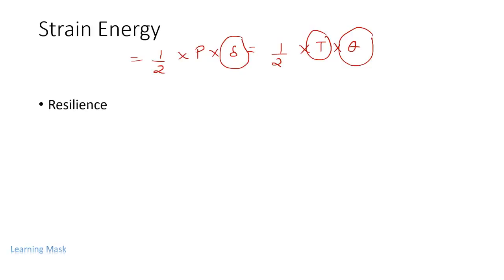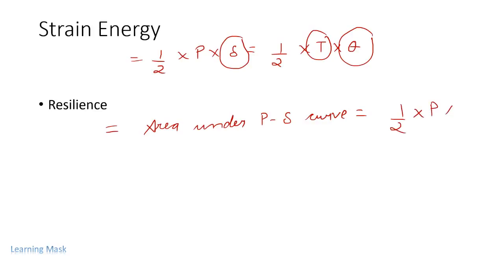Resilience is the ability of a material to absorb energy in the elastic region. Unlike general strain energy, resilience specifically refers to the elastic region. It is given by the area under the P-delta curve: resilience = (1/2) × P × δ, evaluated at the elastic limit. It is important to remember that resilience is limited to the elastic region.